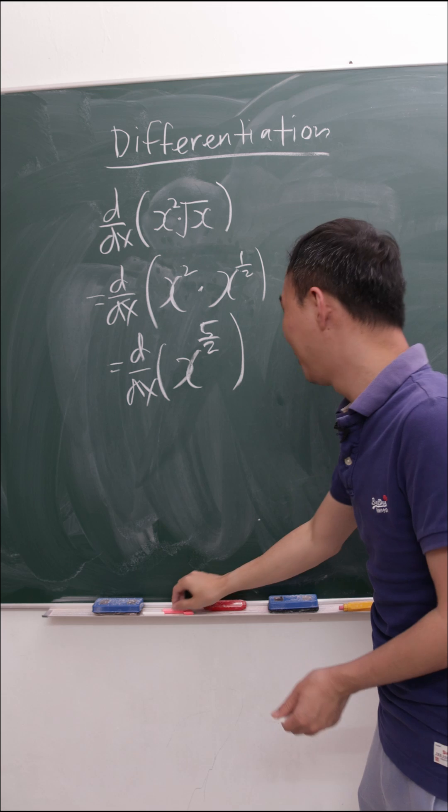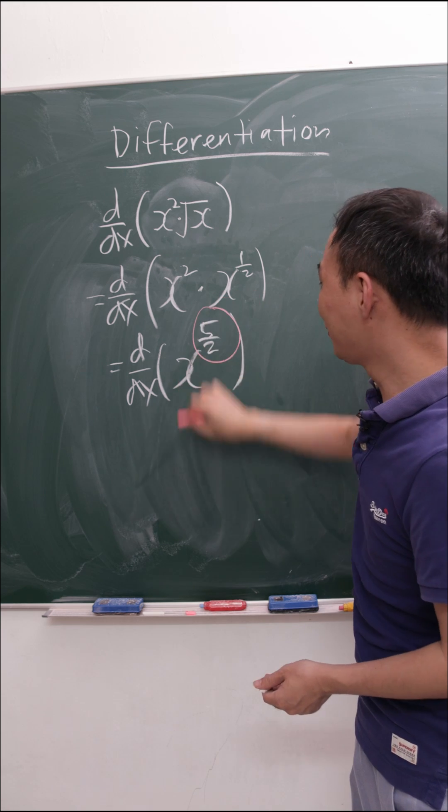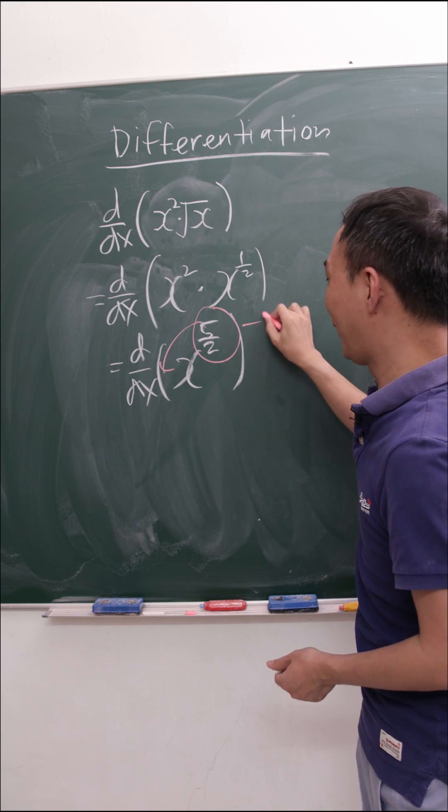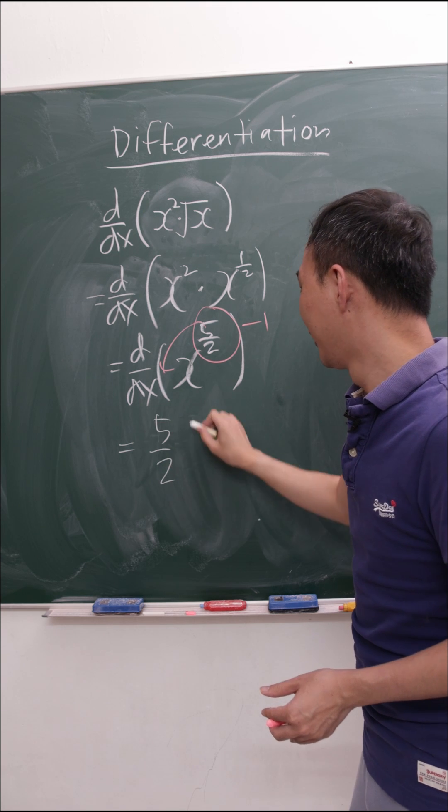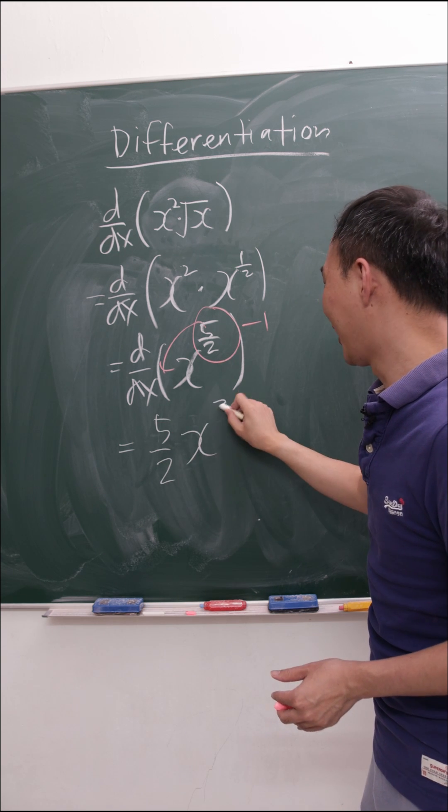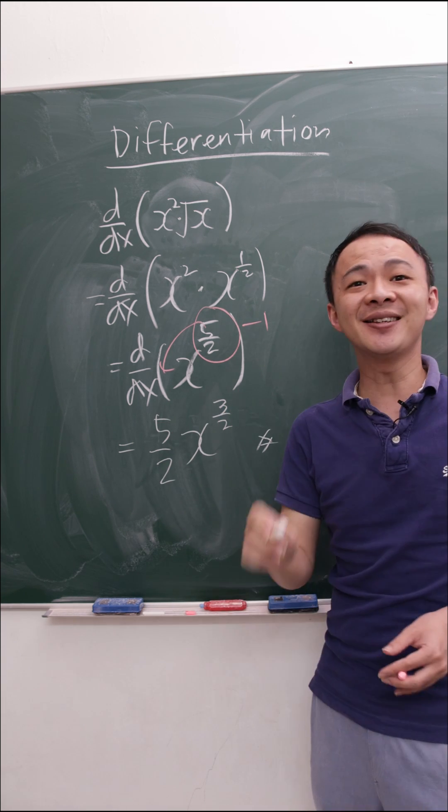If I want to differentiate this, it will be a lot quicker. I just move 5/2 to the front, then minus 1, and I get the answer: 5/2 times x to the power of 3/2. This will be my answer.